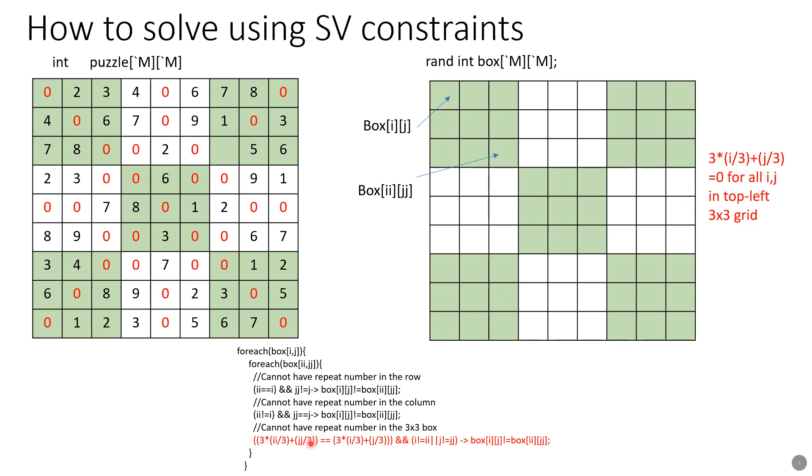So all coordinates for all i,j in this 3 by 3 grid will have a value 0 for this expression. What that means is if 3*(ii/3) + jj/3 is equal to 3*(i/3) + j/3, if this condition is satisfied that means box[i][j] and box[ii][jj] are in the same 3 by 3 grid. You can also note that for all i,j's in this 3 by 3 grid this expression will have a value of 1, for all i,j's in this grid this expression will have a value of 2, and so on.